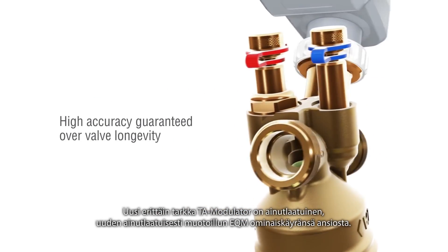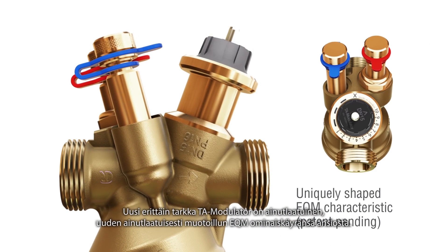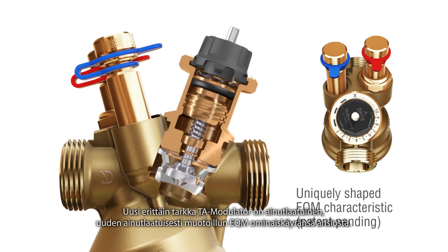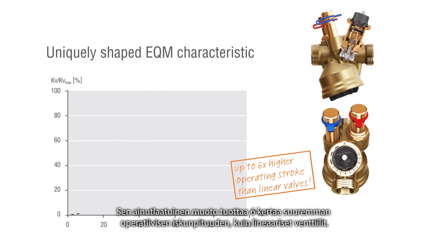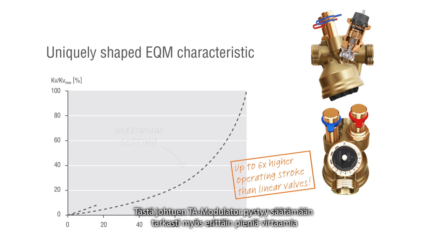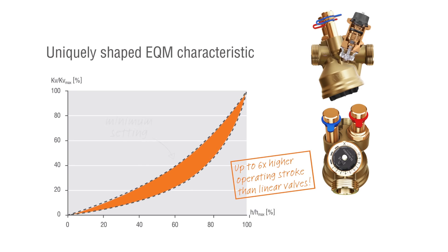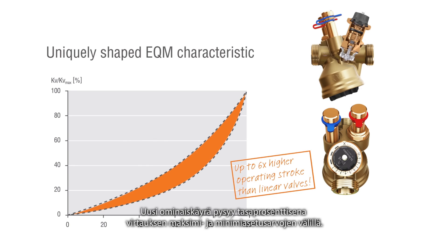The new highly precise TA modulator is unique due to its new patent-pending uniquely shaped EQM characteristic. Its uniquely shaped profile provides an up to six times higher operating stroke than linear valves. Therefore, TA modulator is able to precisely control also very small flows. The new characteristic remains equal percentage within the range of maximum and minimum flow settings.